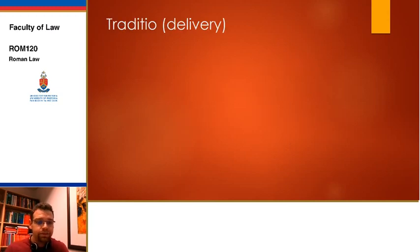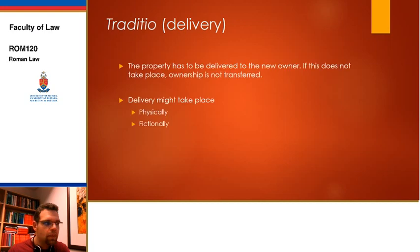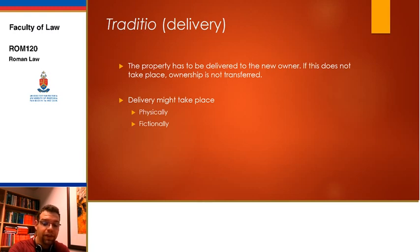Finally, we have traditio. Traditio can take one of several forms and is usually physical. A practical example: if you are buying bread at the store, the store is the owner of the bread; you conclude a justa causa — a contract of sale; Nemo plus juris — they are the owners so they can make you the owner; and traditio — they physically give you access to the bread, which you then take and eat. Traditio usually takes place physically.